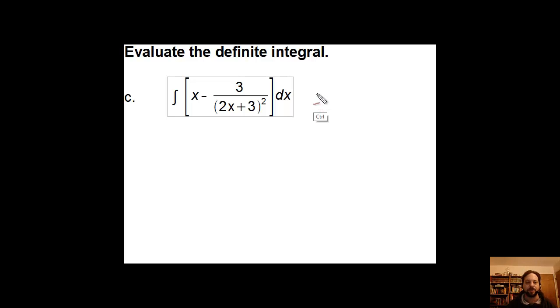In our next problem, we have an integral that has two terms in it. What I'm going to do is handle those terms separately. I'm going to break this up into the integral of x dx minus three times the integral of 2x plus 3 to the negative 2 dx.